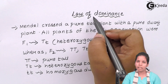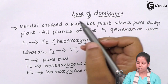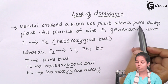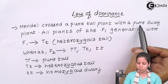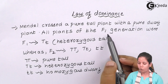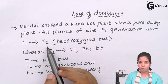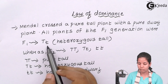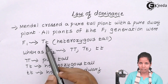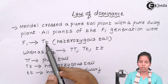To obtain the results for the Law of Dominance, the experiment Mendel did was he crossed a pure tall plant — capital T, capital T — with a pure dwarf plant — small t, small t. After the cross was done, what Mendel observed was that all plants of F1 generation were capital T and small t — that is heterozygous tall. Heterozygous means different gametes, but they showed phenotypically taller heights; they were tall in nature.